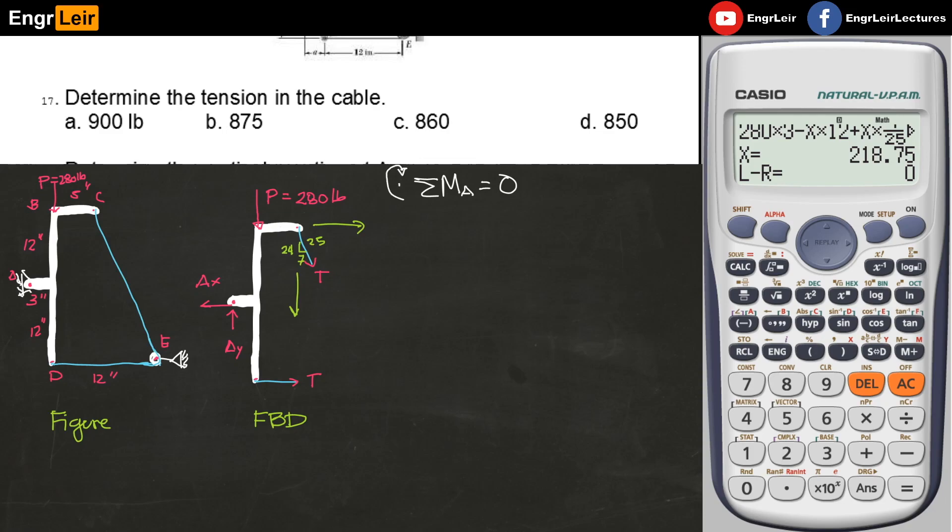I will take the summation of moments at point A, which must equal zero. Let's take clockwise as positive. First, consider if we have 280 times the moment arm to point A, which is 3 inches. The sign convention - you decide this yourself, whether positive or negative is clockwise or counterclockwise. It's your choice.